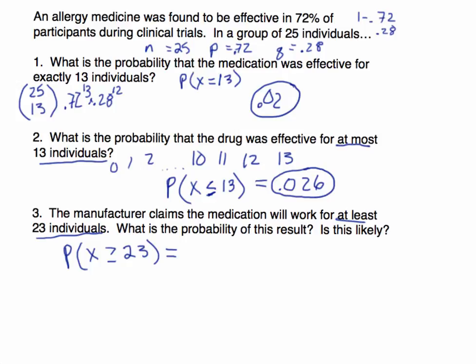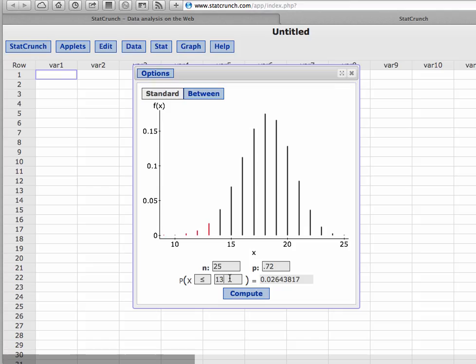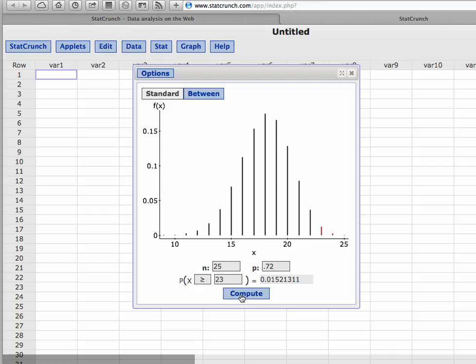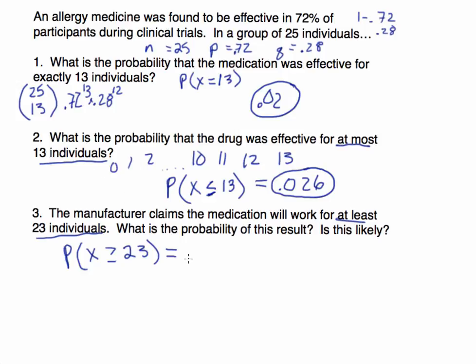In StatCrunch, we change X from 13 to 23, and change the less-than-or-equal-to sign to greater-than-or-equal-to. After computing, P(X ≥ 23) = 0.015. Rounded to the hundredth place, it's still 0.02. That coincidence aside, if we calculated something like 15 or more or 14 or more, those would be very different probabilities. The probability of at least 23 is 0.015.